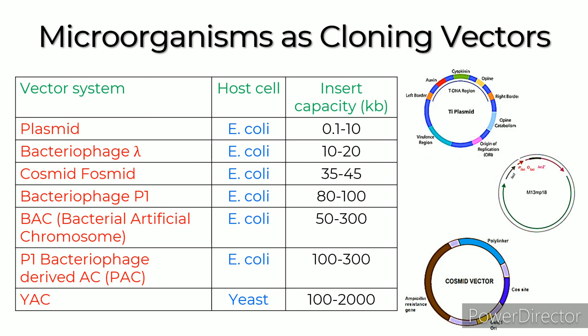A table shows vector systems with their host cells and insert capacity in kilobases. Vectors include plasmid, bacteriophage lambda, cosmid, fosmid, bacteriophage P1, BAC or bacterial artificial chromosome, P1 bacteriophage-derived AC or PAC, and YAC. Cloning vectors are used majorly in DNA sequencing studies, gene therapy for curing illnesses, making new seed strains and improved fruits and vegetables in agriculture, and assembling vitamins and antibiotics in the pharmaceutical sector.